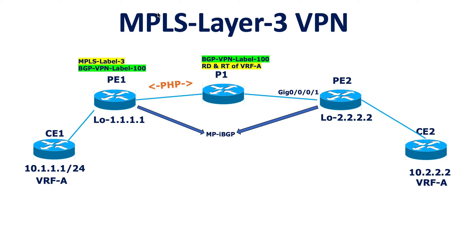Now, when the MP-IBGP session is configured between PE1 and PE2's interface IPs instead, the PHP operation happens between PE1 and the provider router — one hop before PE2. So PE1 adds both the MPLS transport label and VPN label, but the provider router ends up receiving the VPN label directly. Since the provider router has no VRF A information configured, it simply drops the packet. The end-to-end Layer 3 VPN communication breaks.